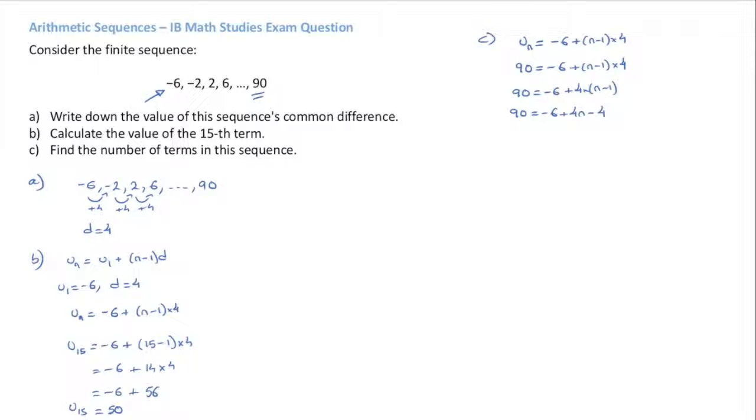That leads us to 90 equals 4N minus 10. This in turn leads us to 90 plus 10 equals 4N, which leads us to 100 equals 4N.